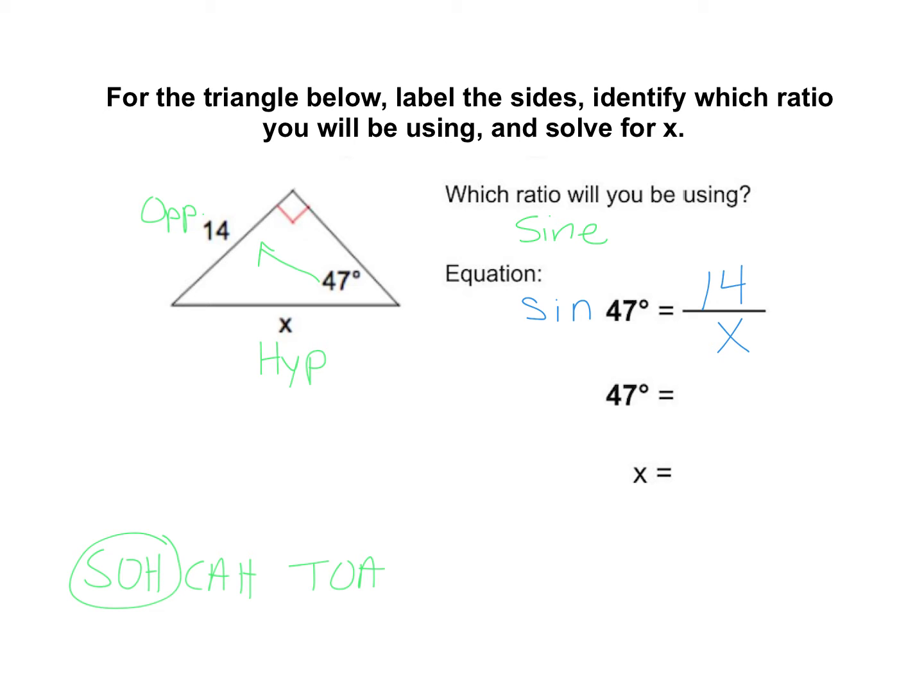Now, the x is on the denominator this time, so to get rid of the x in the denominator, we have to take both sides and multiply them by x. So we would do this, and now on the next step, we're down to the equation x sine of 47 degrees is equal to 14.